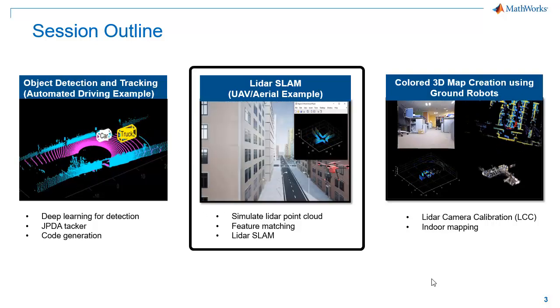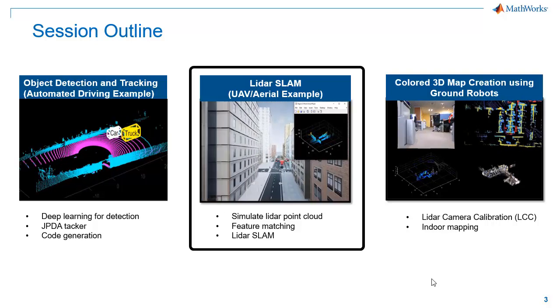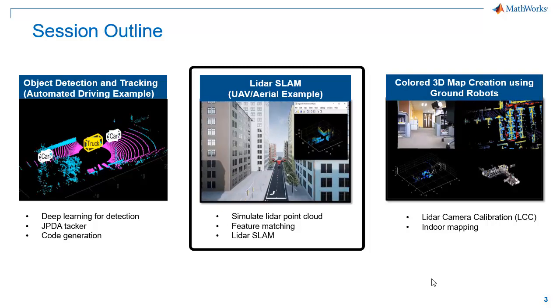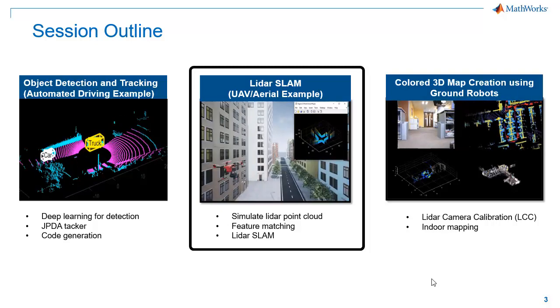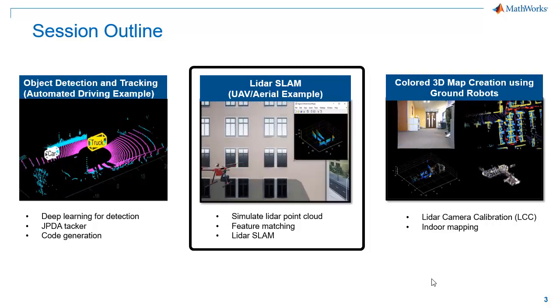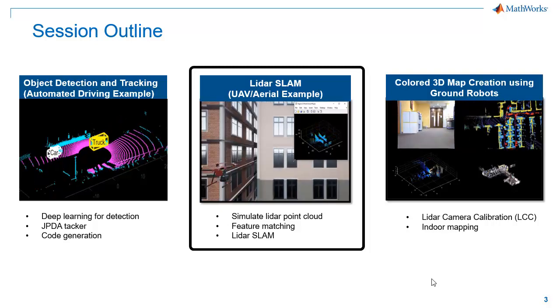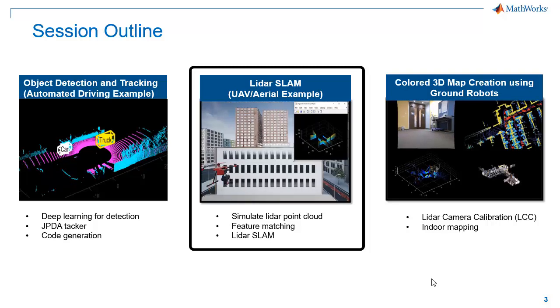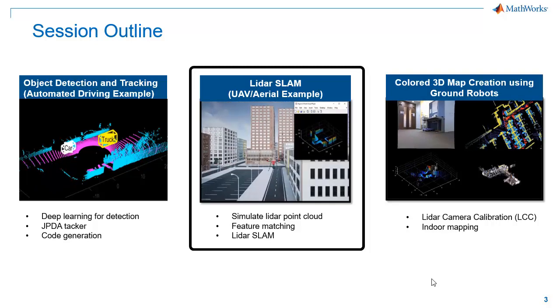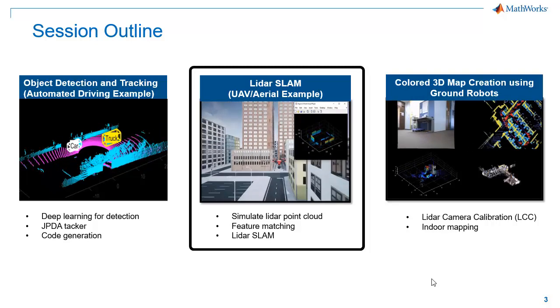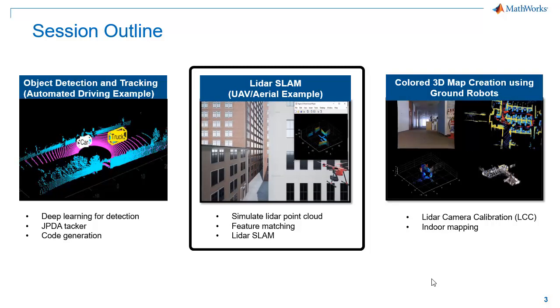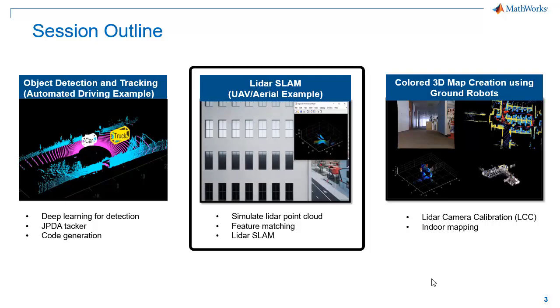In the second example, we will implement simultaneous localization and mapping on point cloud data streamed from a LiDAR sensor mounted on a UAV in a simulation environment. We will show how to perform feature-based LiDAR SLAM in this example.